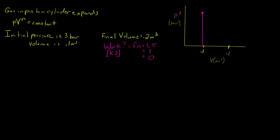In this example, a gas in a piston-cylinder assembly is expanding with the relationship PV^n equals a constant. Initially the pressure is 3 bars at state 1, the volume is 0.1 cubic meters, and the final volume is 0.2 cubic meters. We need to determine the work for n equal to 1.5, n equal to 1, and n equal to 0.